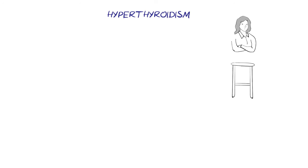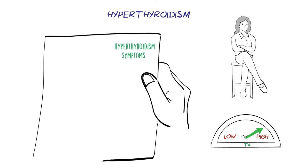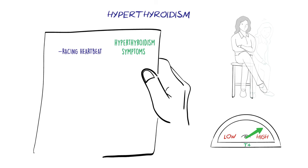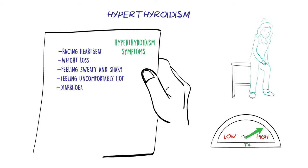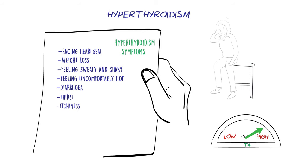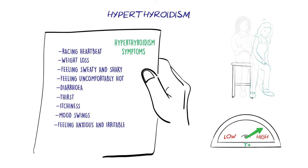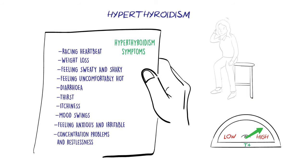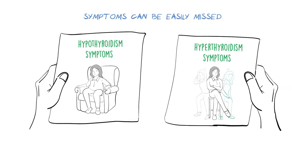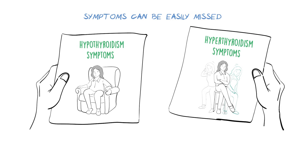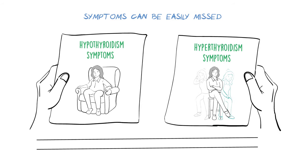In hyperthyroidism, by contrast, the body's metabolism speeds up. This leads to a very different pattern of symptoms such as a racing heartbeat, loss of weight, feeling sweaty and shaky, feeling uncomfortably hot, diarrhoea, thirst, itchiness, mood swings, feeling anxious and irritable, concentration problems and restlessness. While these symptoms are wide-ranging, it is rare to experience all of them and they may be missed or confused with other conditions. For some people, symptoms are subtle and hardly noticeable, while for others they can have a significant impact on daily life.